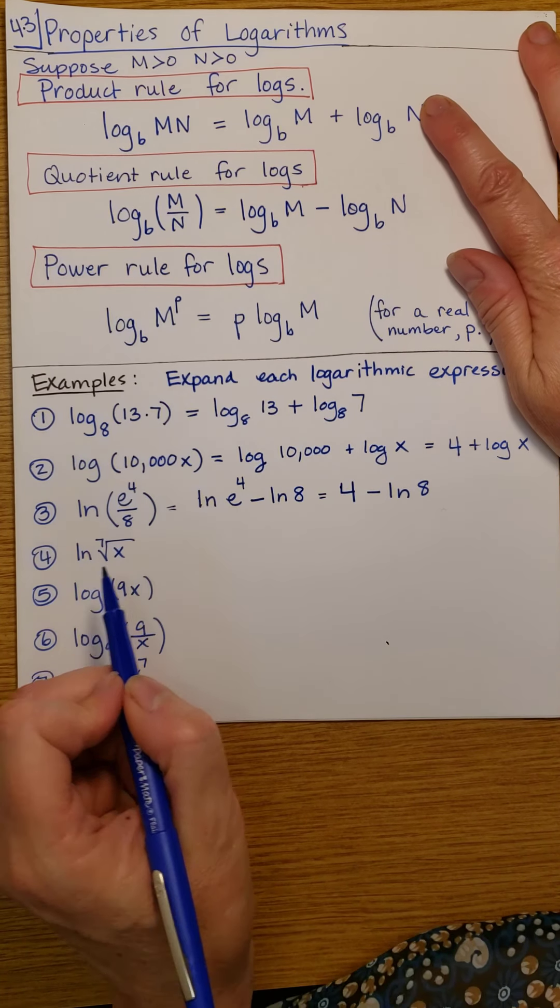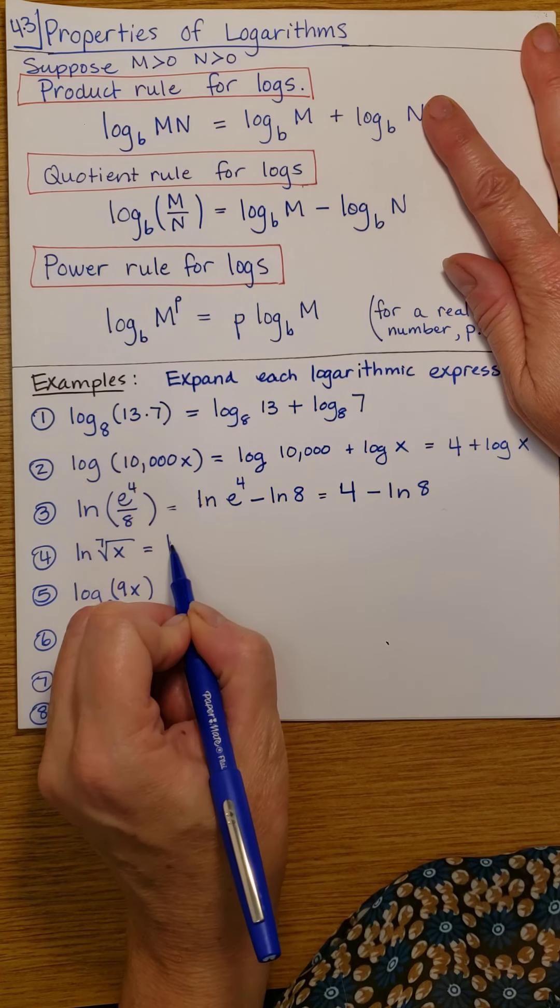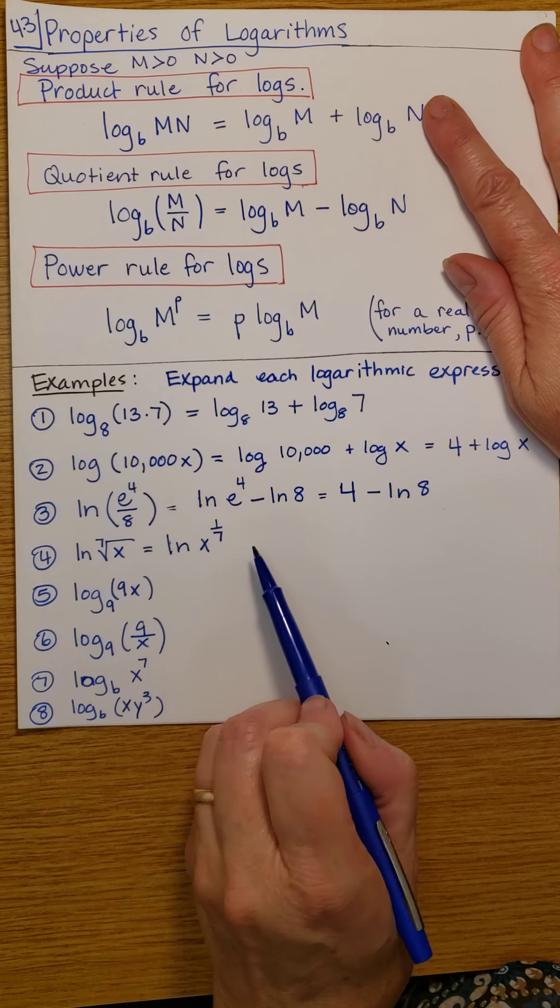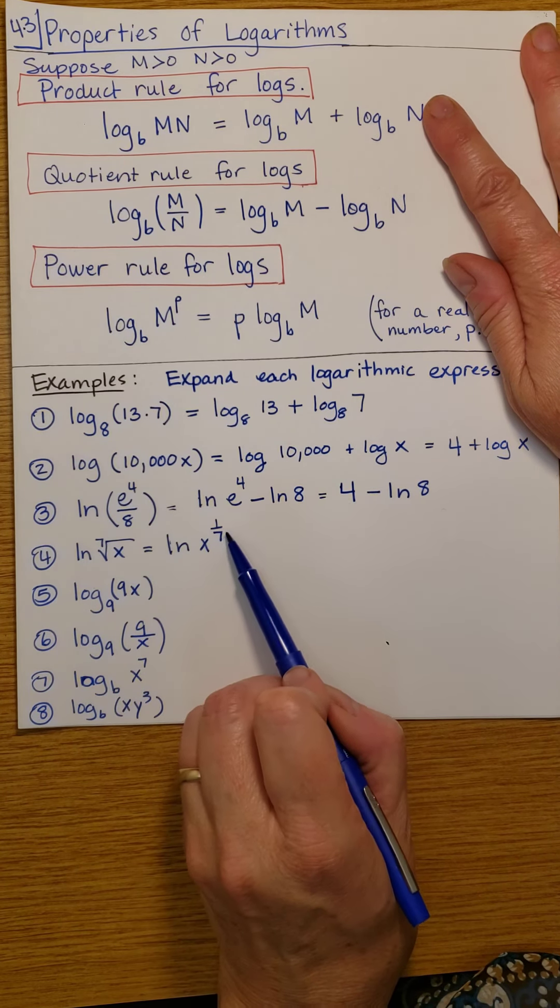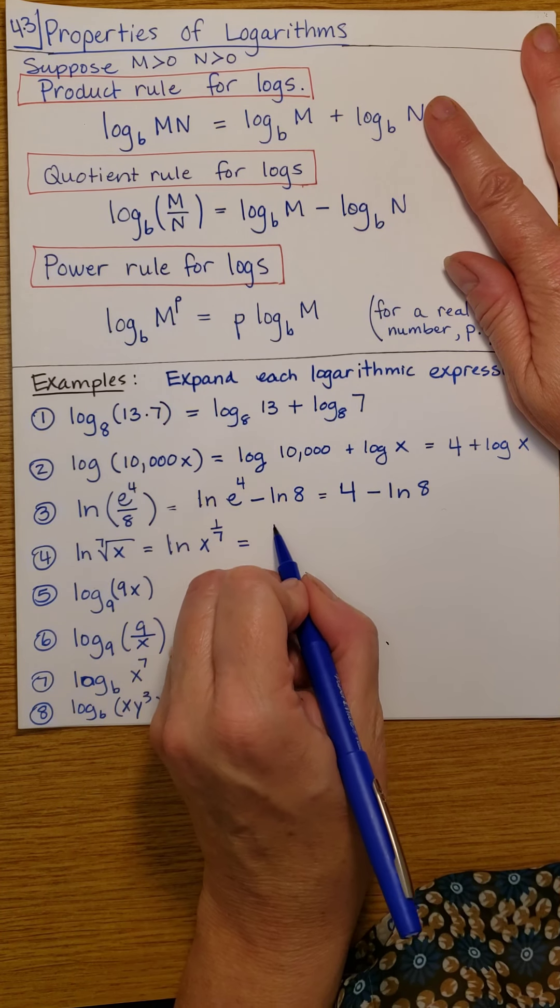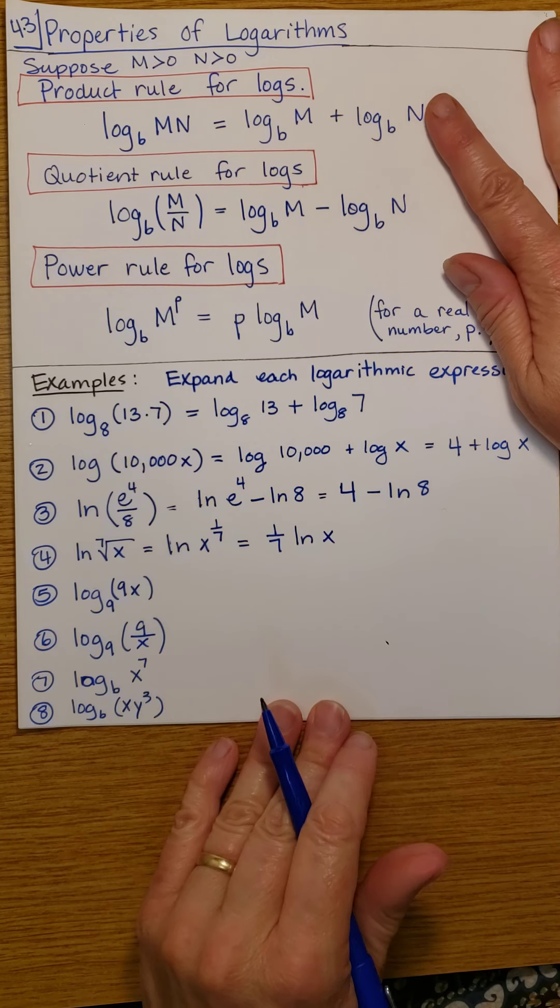Here, we need to think of this natural log of the 7th root of x. Think of it as the natural log of x to the 1/7th power. That's what the 7th root is in terms of exponents. It's 1/7th. And by the power rule, I can bring that 1/7th out front.